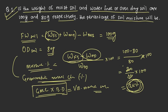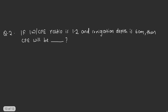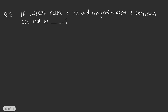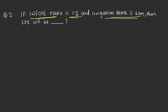To know more about these concepts, you can refer to our YouTube channel where lectures on how to draw the soil moisture characteristic curve and related topics have already been uploaded. The next student question was: if the IW/CPE ratio is 1.2 and the irrigation depth is 6 cm, what will be the CPE value? The IW/CPE ratio is used for irrigation scheduling.